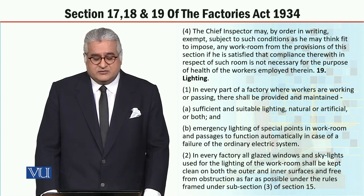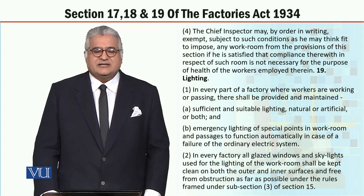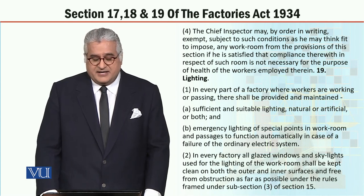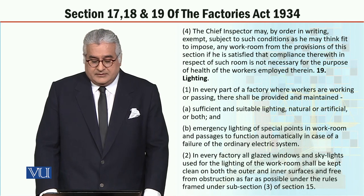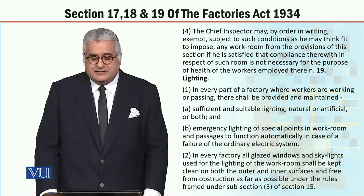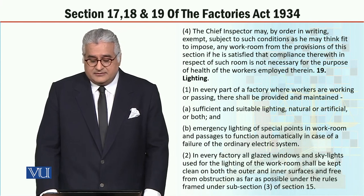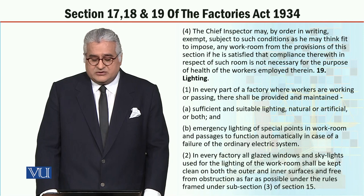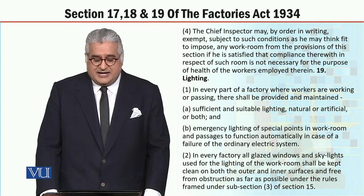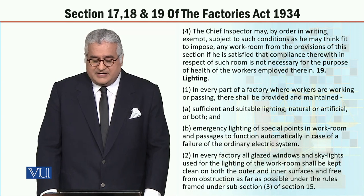Section 19 relates to lighting. What are the standards and procedures regarding lighting under the Factories Act? Section 19, subsection 1: In every part of a factory where workers are working or passing, there shall be provided and maintained sufficient and suitable lighting, natural or artificial or both, and emergency lighting of special points in work rooms and passages to function automatically in case of a failure of the ordinary electric system.